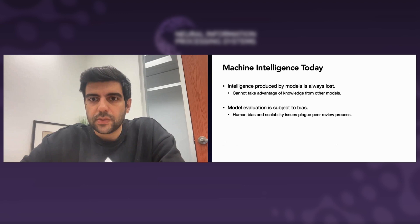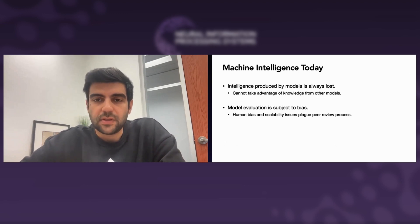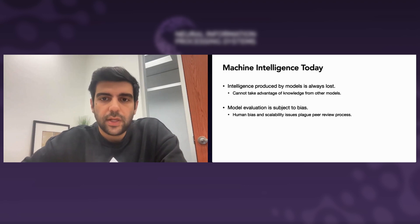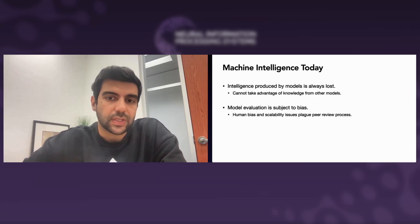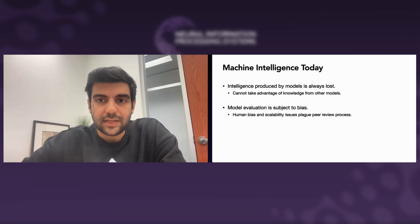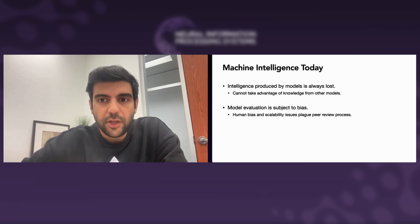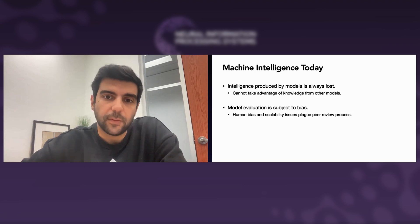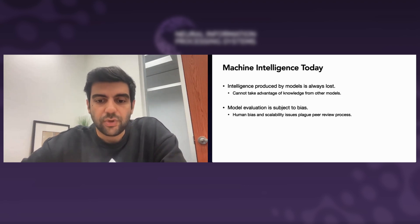Machine intelligence today is plagued by two problems. First, any intelligence produced by models is always lost. Machine learning research compounds every year with new and innovative ways to incrementally build on older ones. We publish new papers and works each year, building incrementally on previous work. However, the models trained in these works are typically discarded and new ones are developed every iteration. This means that to beat the state of the art, we often have to train from scratch and can't directly take advantage of what a previously trained model has already learned.